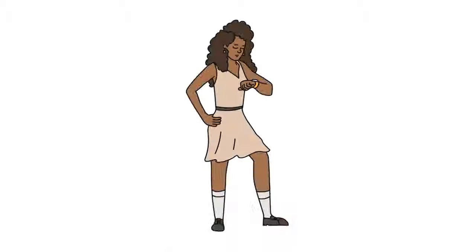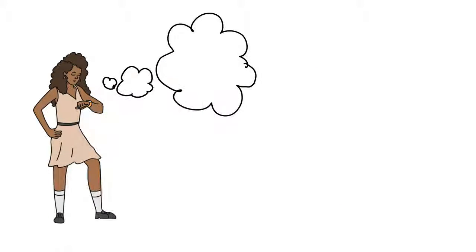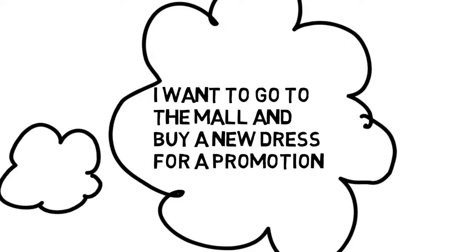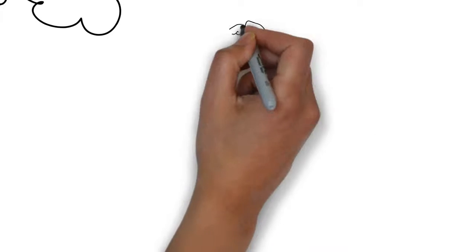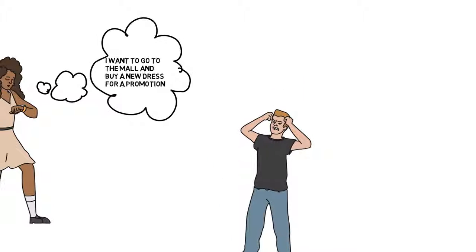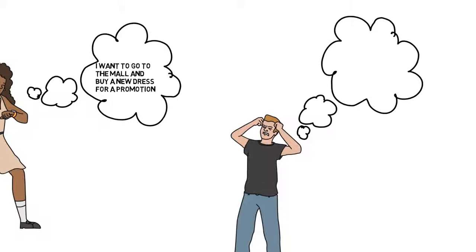The third is selective hearing. This would be like if one of your friends says, 'Hey, I want to go out to the mall and get a dress for a new promotion so that I can look better and try to make more money.' And then all you hear is you just want to go to the mall and spend the money.